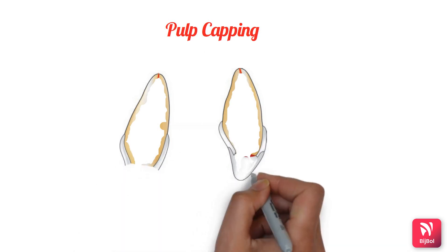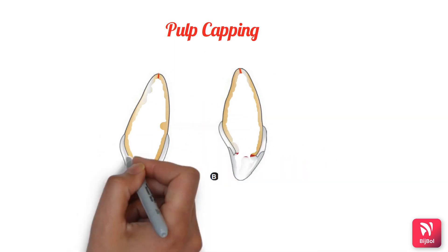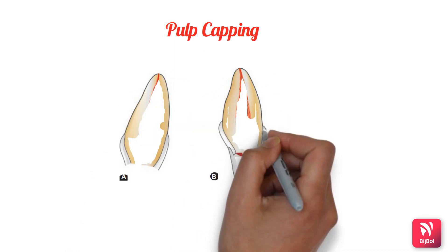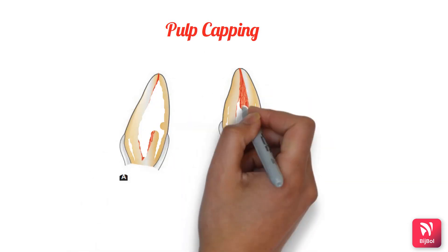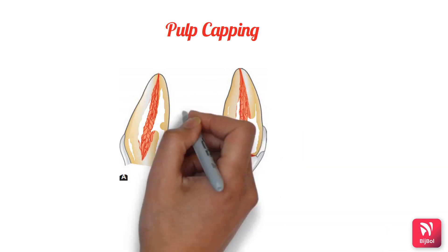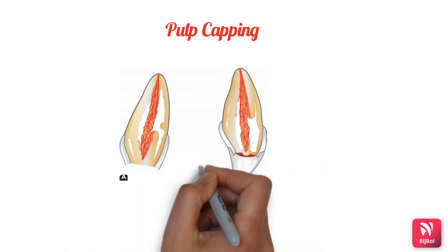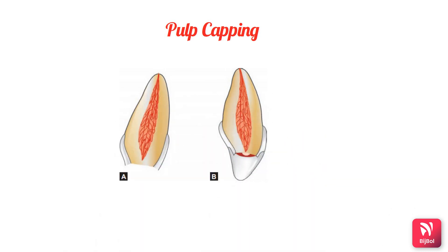Pulp capping implies placing a dressing directly onto the pulp exposure. It is indicated for a very recent exposure of less than 24 hours in a mature permanent tooth with a simple restorative plan.